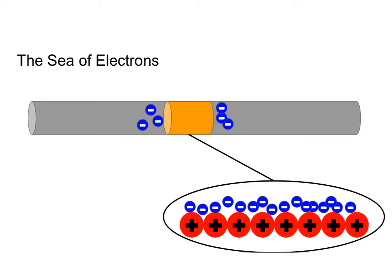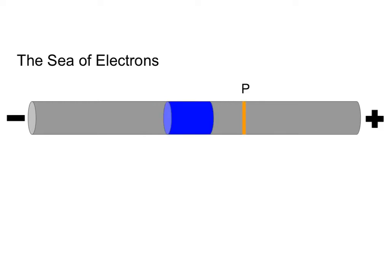The sea of electrons essentially means that we have a bunch of electrons freely flowing around our wire. That orange section of wire that I've zoomed in on has electrons going into it and electrons that can come out of it, so charges in this wire can continuously be moving. This idea of moving charges in the sea of electrons is what brings us to the idea of current.